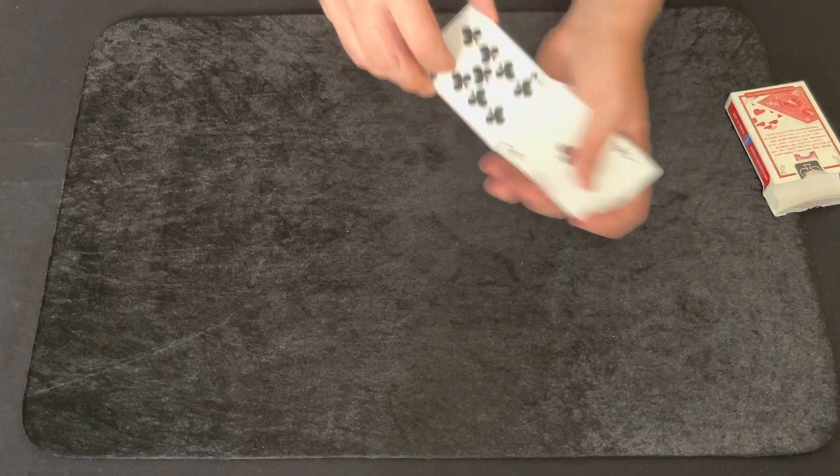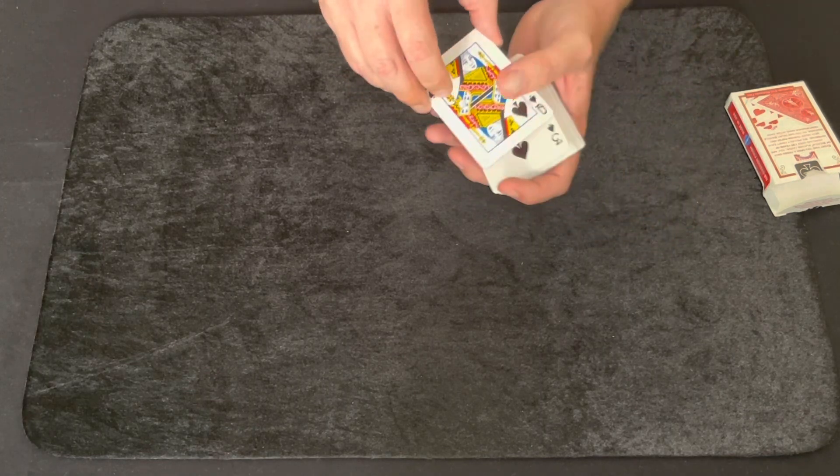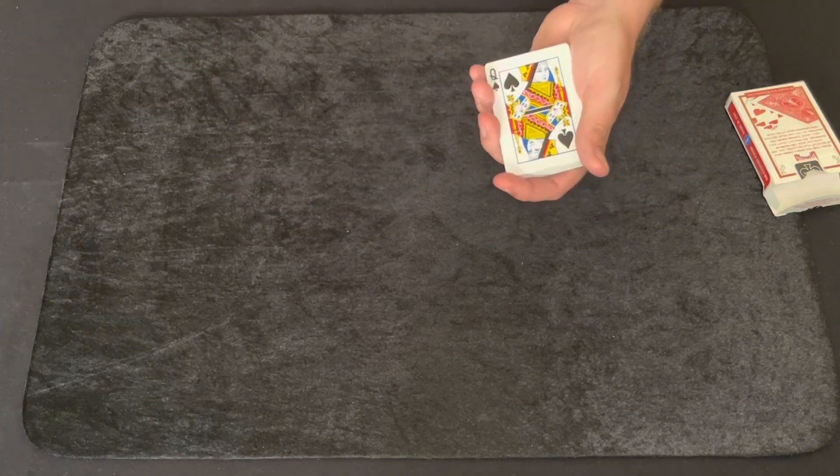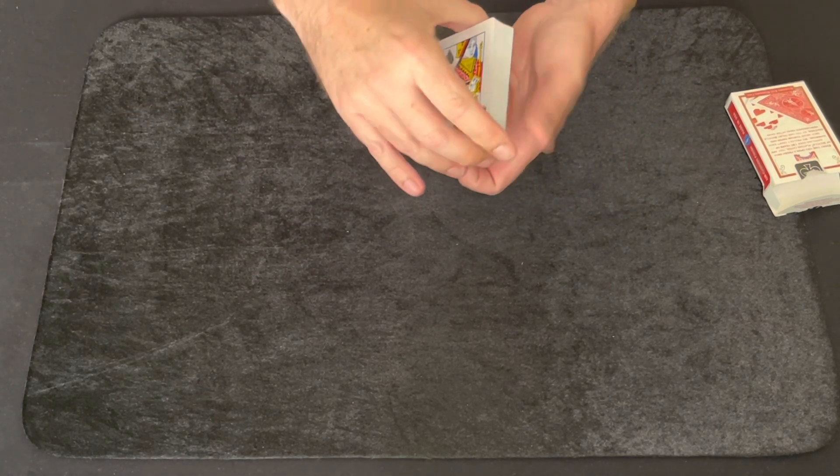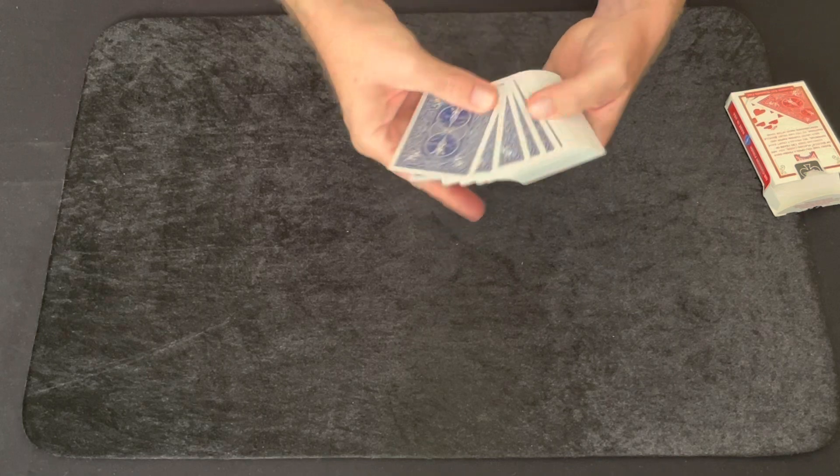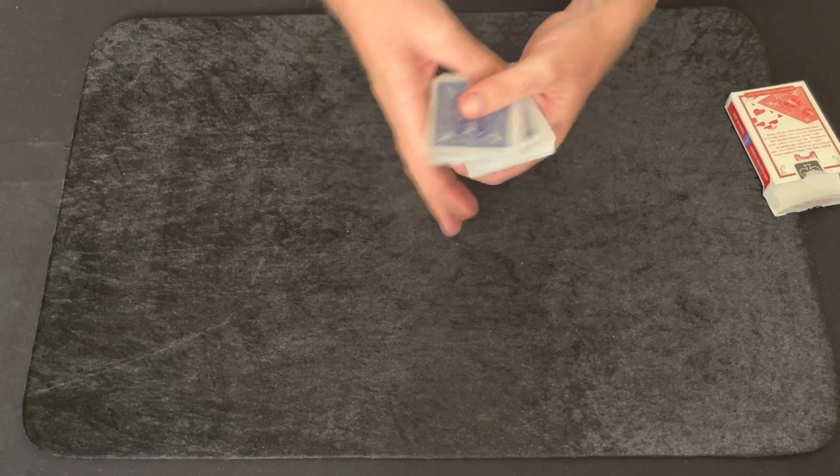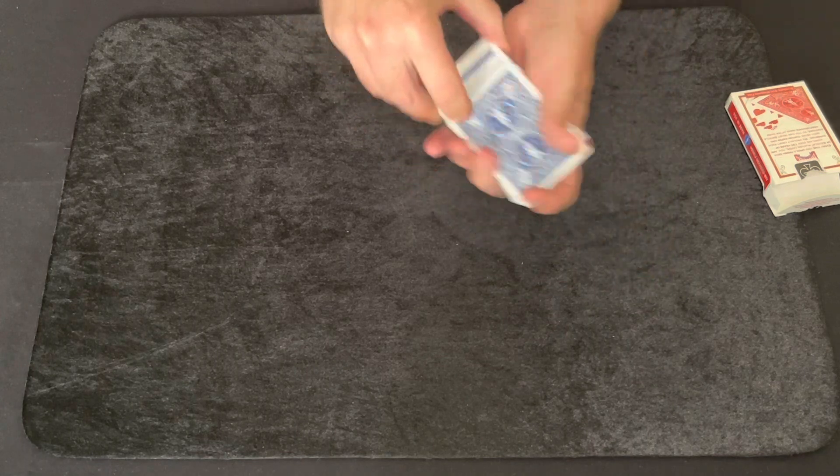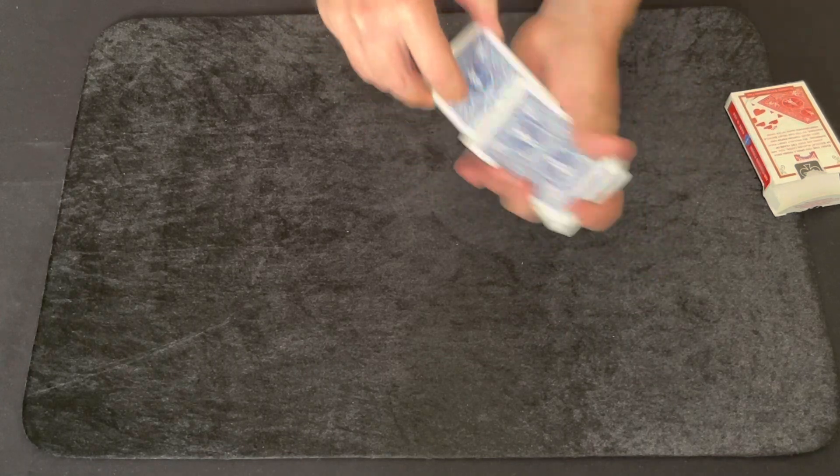Now obviously this trick is better if I do the shuffle face down so I can't see the card. But it's also better to do this trick with a blue deck. So I'm going to take my regular blue deck of cards and give them a shuffle and have the spectator tell me when to stop.